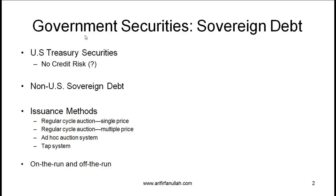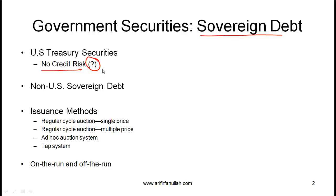Let us start by talking about government securities. When any government issues debt, that is referred to as sovereign debt. Perhaps the most well-known or widely traded sovereign debt is the U.S. sovereign debt in the form of U.S. treasury securities. The key point about U.S. treasury securities is that they are perceived to have no credit risk. This has been the general perception, but there is a question mark here because of the recent downgrade of the U.S. debt by S&P.